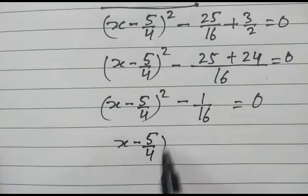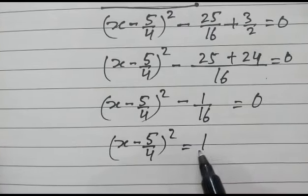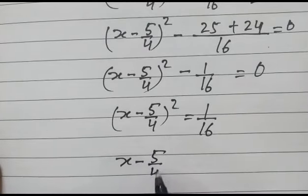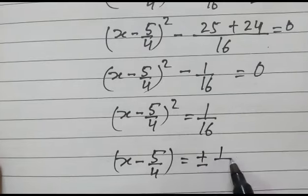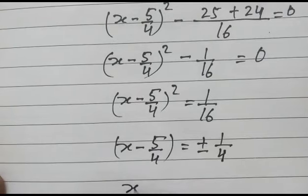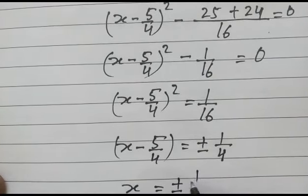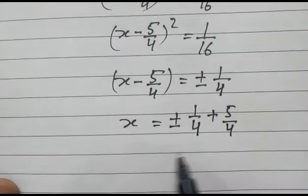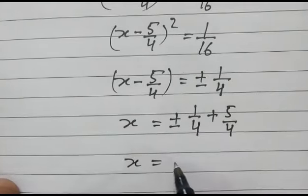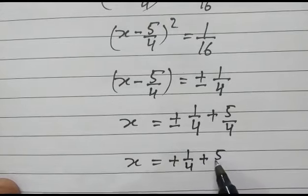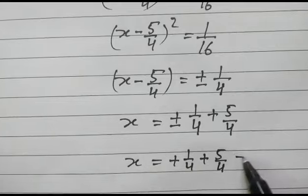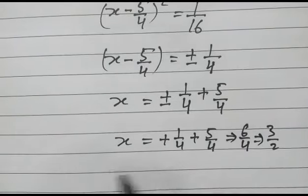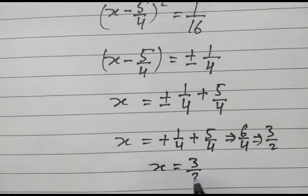So (x minus 5/4)² is equal to 1/16. Therefore x minus 5/4 is equal to plus or minus 1/4. So x is equal to plus or minus 1/4 plus 5/4. If we take the positive case: x equals plus 1/4 plus 5/4, we get 6/4, or 3/2. So x is equal to 3/2.